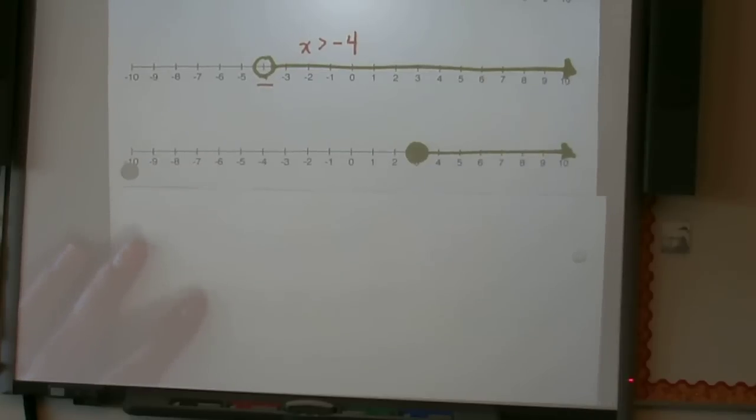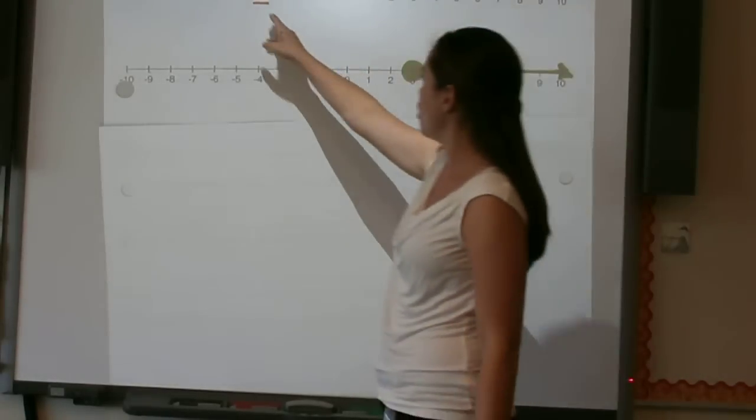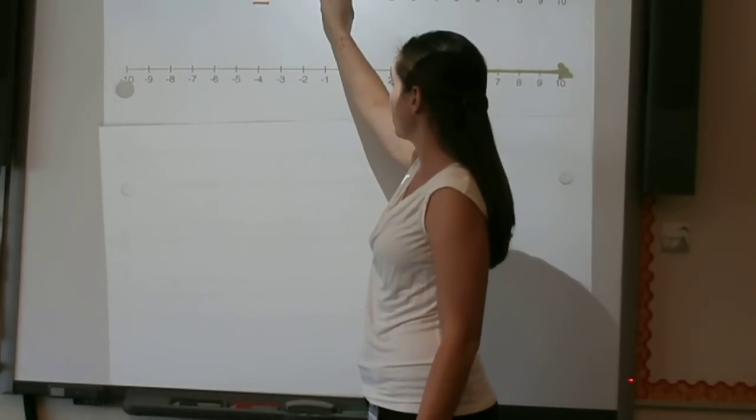Next example, now we have a closed circle. So if we notice here in this example, we had an open circle. So x was greater than negative four.